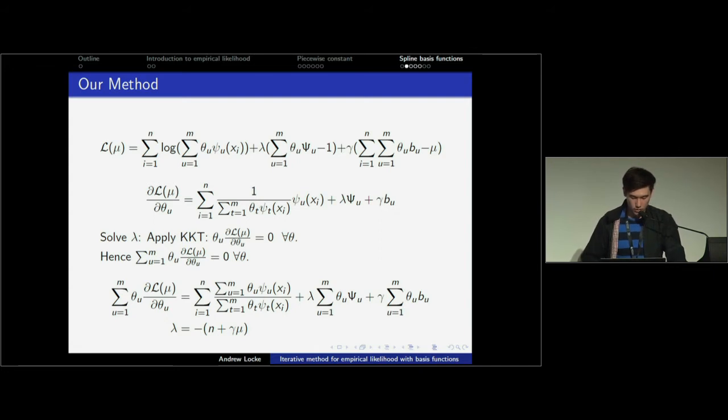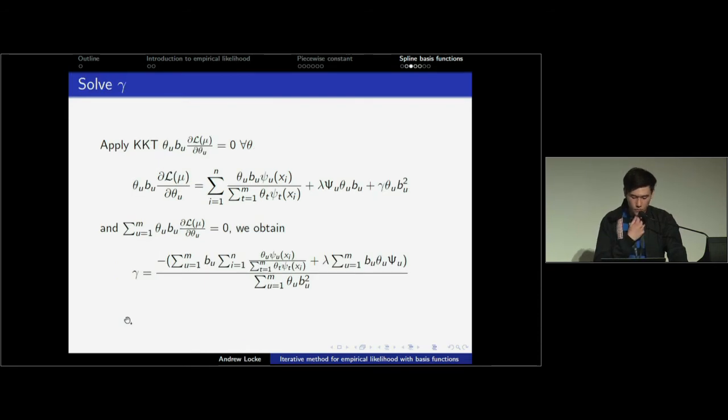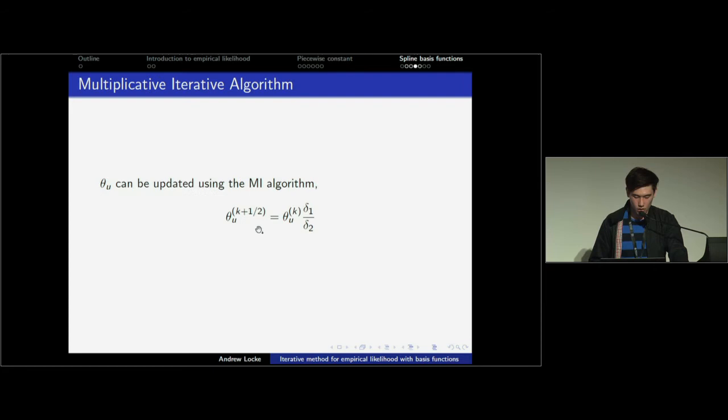This is our likelihood, and we're just using the Lagrangian multipliers again and applying KKT and solving again. We can also find a simple solution for lambda and update that accordingly. It's the same method that we're using here, and same for gamma. Again, just multiplying the theta instead of pi by the first constraint.